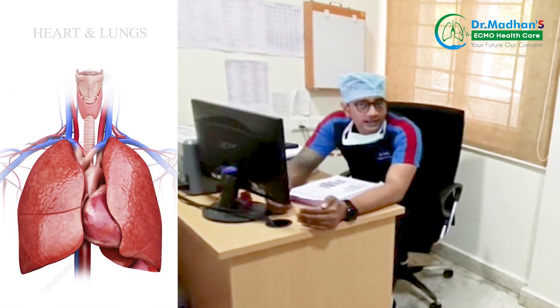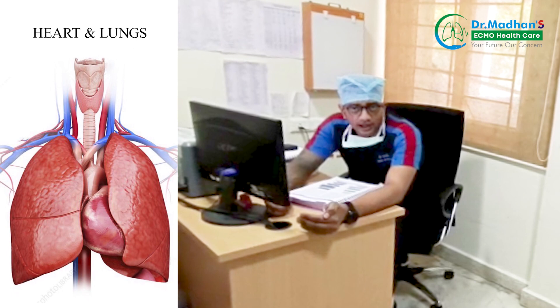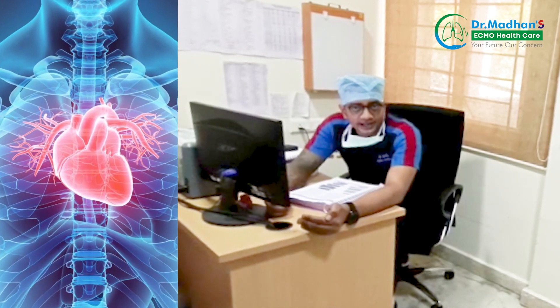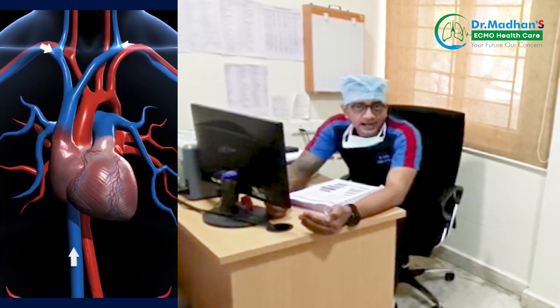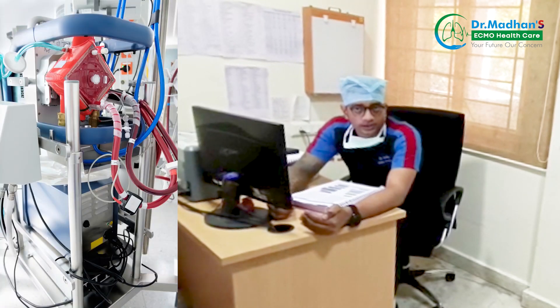Your heart and lungs have the function of a machine. Basically, the heart will pump out the blood and it will oxygenate the blood. So in cases of heart failure, heart attack, acute lung injury, or poison — if the heart and lung are damaged, if we use ECMO, it will provide temporary support.